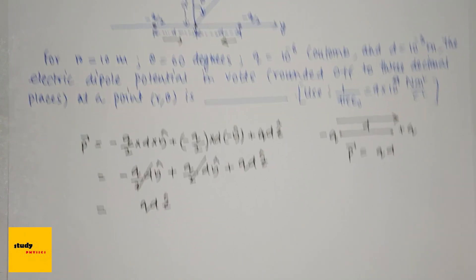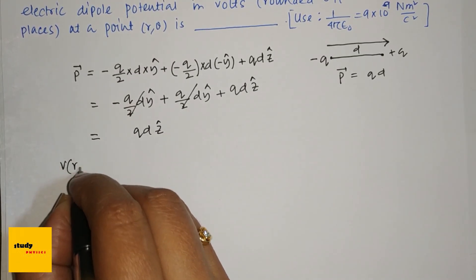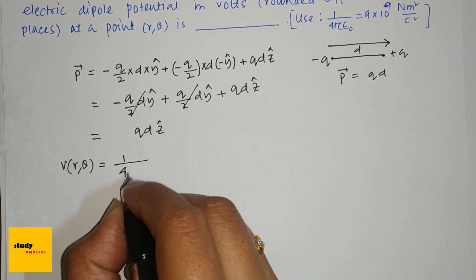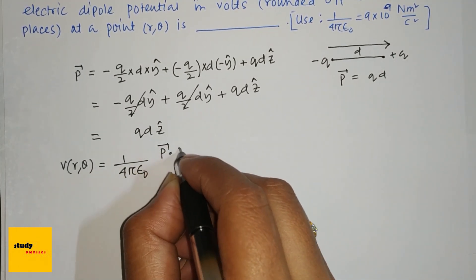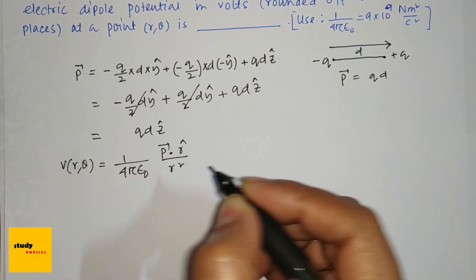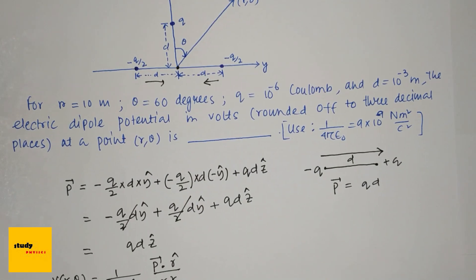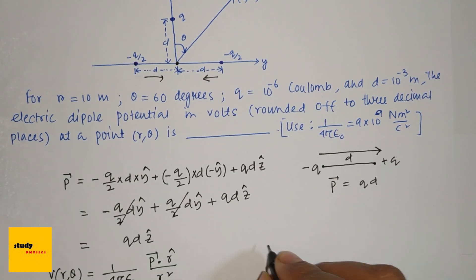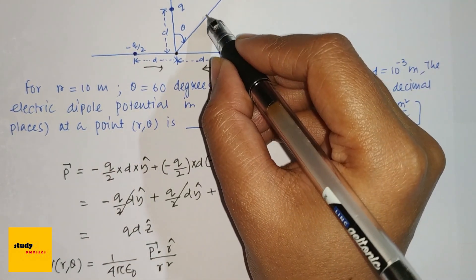We know that the electric dipole potential V(r, theta) is 1 divided by 4 pi epsilon-naught, times p dot r-cap divided by r squared. So let's find r-cap.